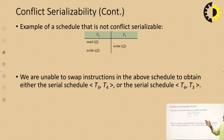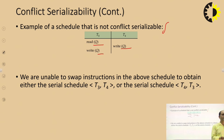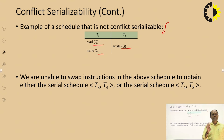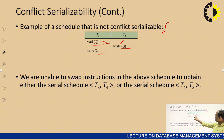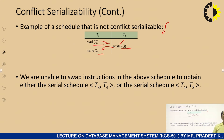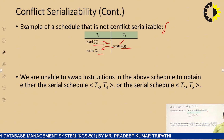Here is an example of a schedule that is not conflict serializable. There is a data item Q that can be updated by T3 and also updated by T4. One data item cannot be updated by two transactions at the same time, because we read and update item Q in T4, and then T3 also tries to write it — this is not possible in a serial schedule. So this schedule is called a non-conflict-serializable schedule.